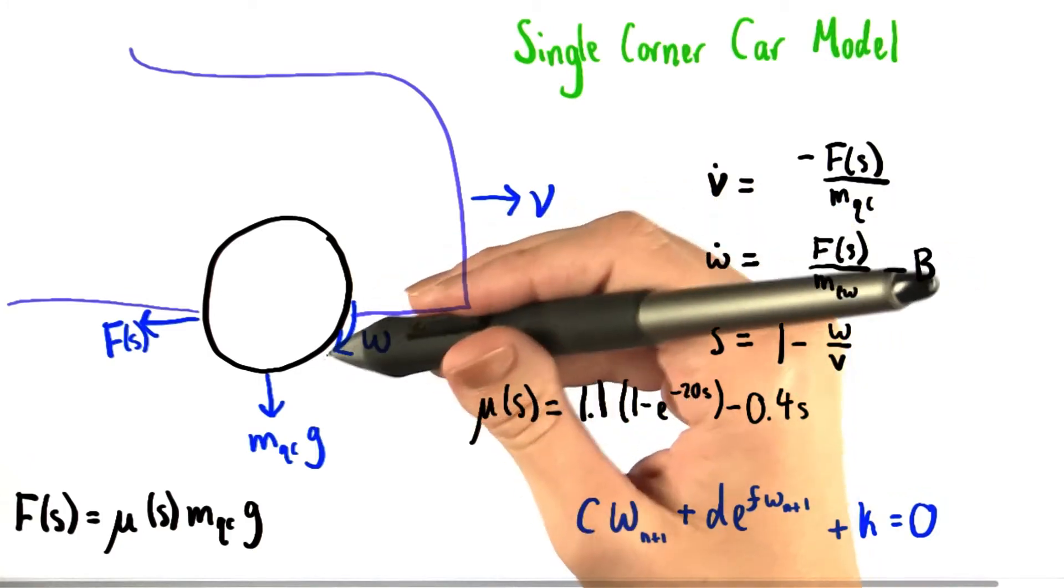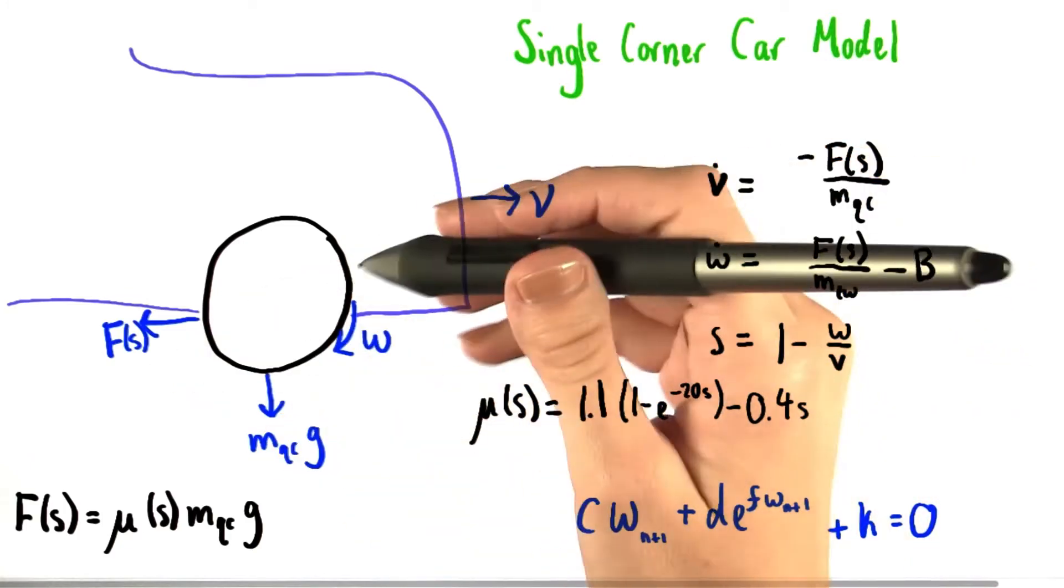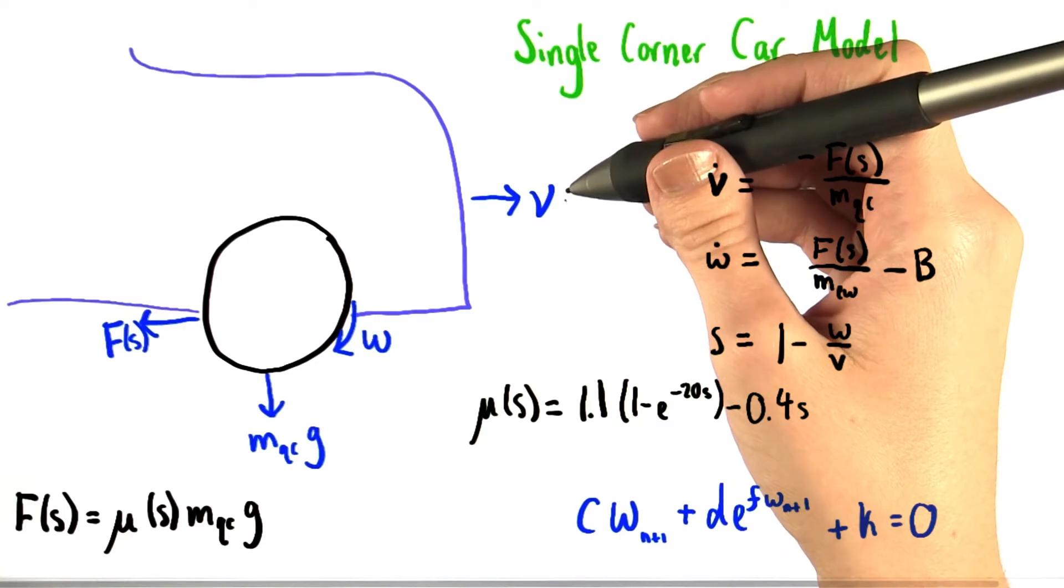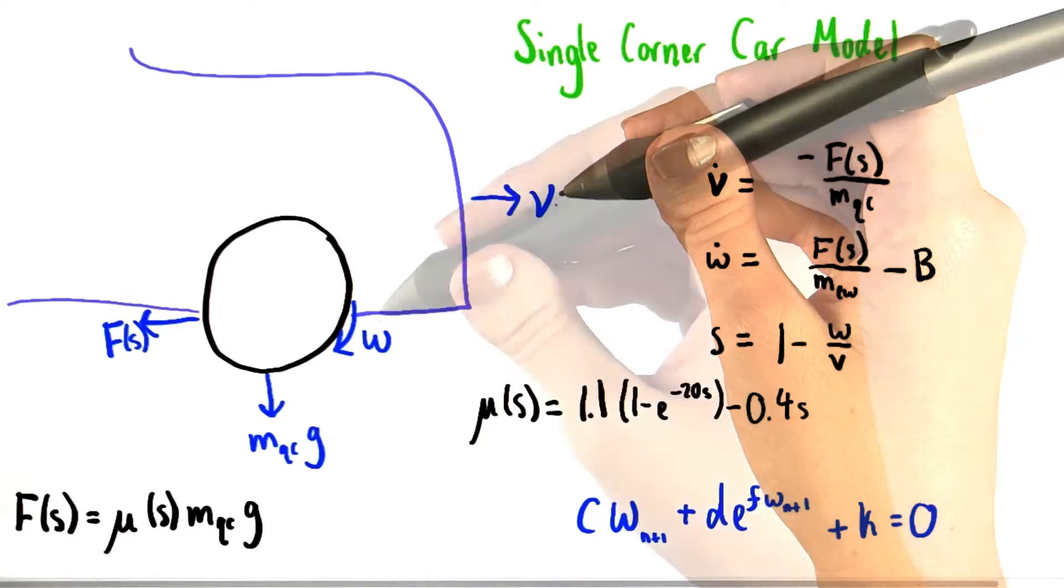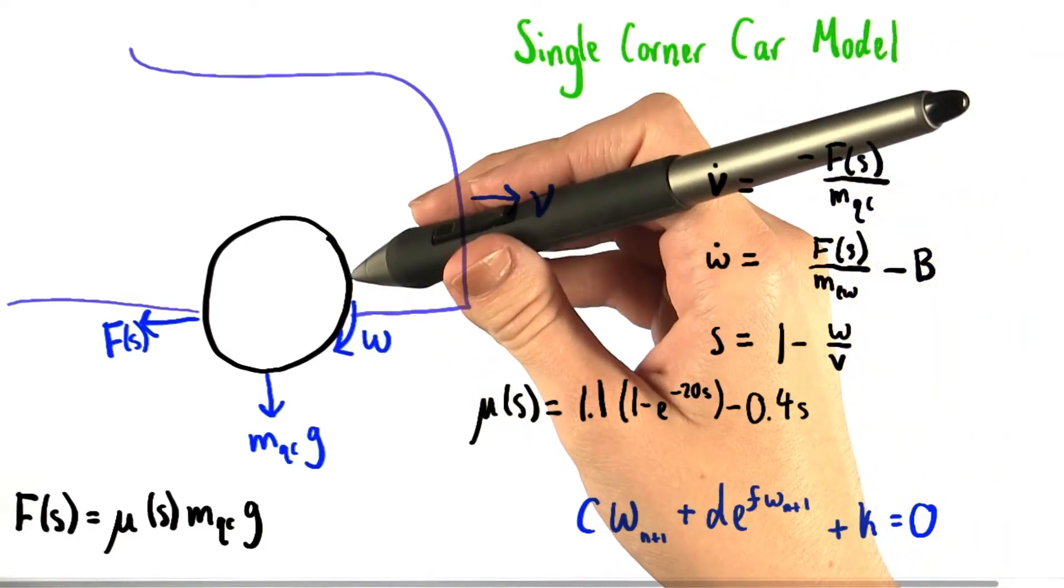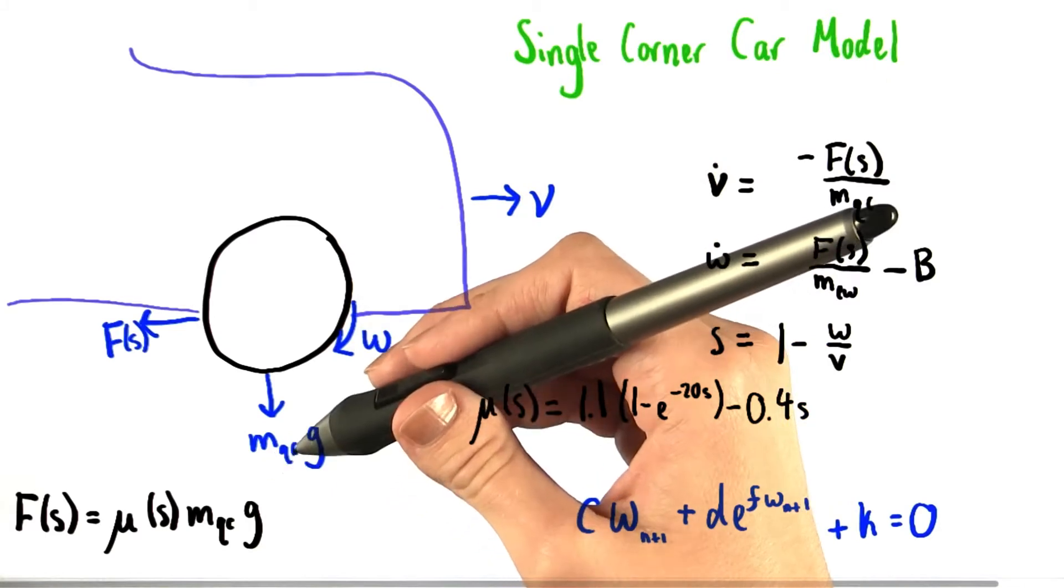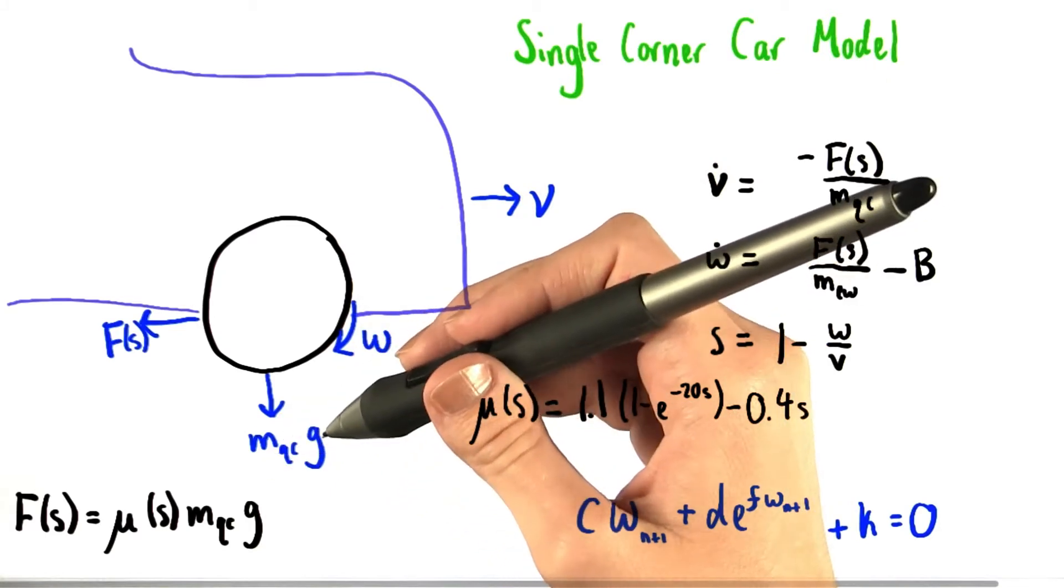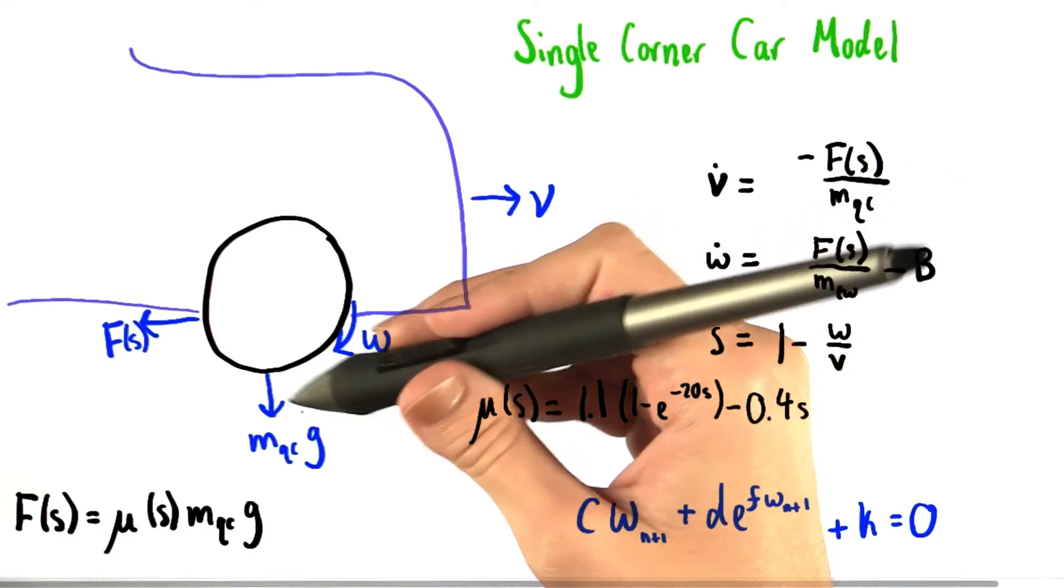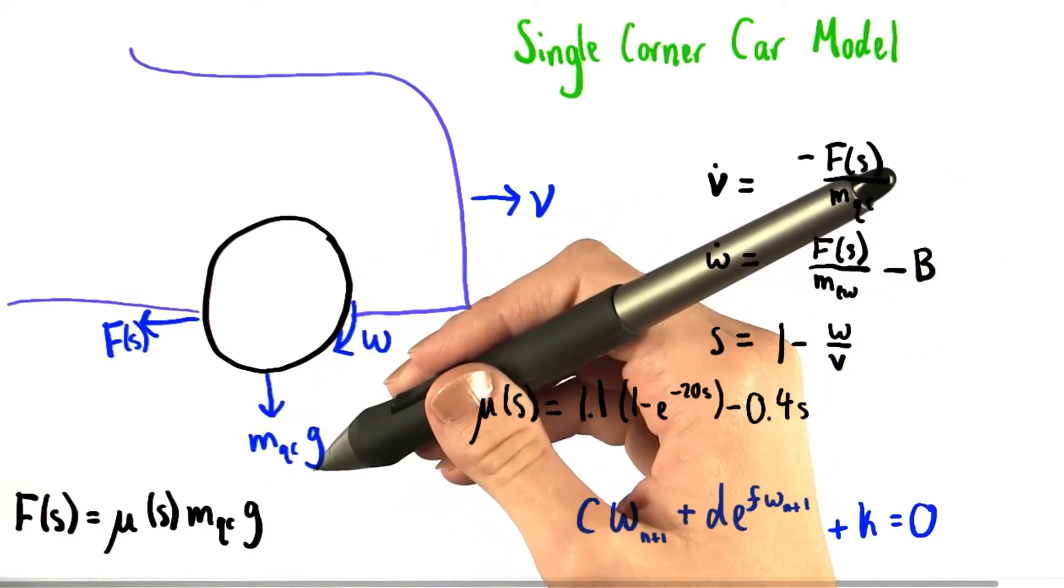Now, all of these arrows represent different types of quantities, but they're just useful for showing direction. V here represents the velocity of the car. W is the tangential velocity of the wheel. MQC is the mass of one quarter of the car, and therefore MQC times G is equal to the gravitational force on this quarter of the car.